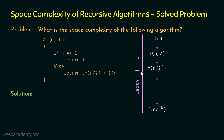We need to represent the depth in terms of the input size n, not k. So we need to find the value of k in terms of n. Observe the last function call f(n/2^k): since this is the last function call, the base case must be satisfied. We know the value of n inside this call is n/2^k, so if the base case is satisfied, then n/2^k must be equal to 1.